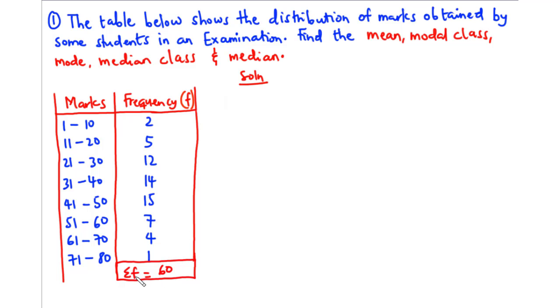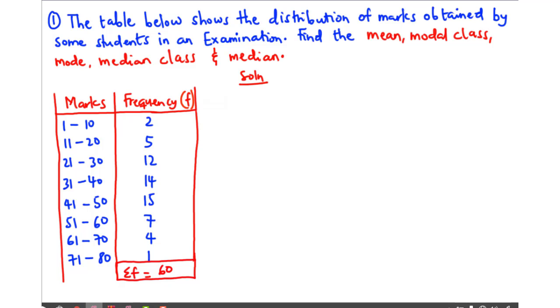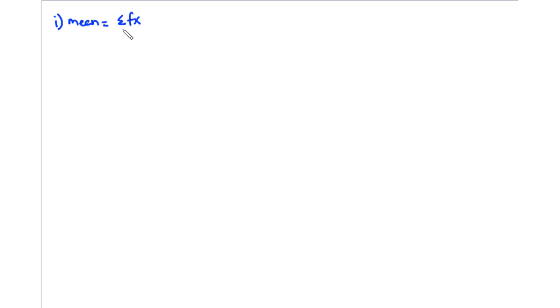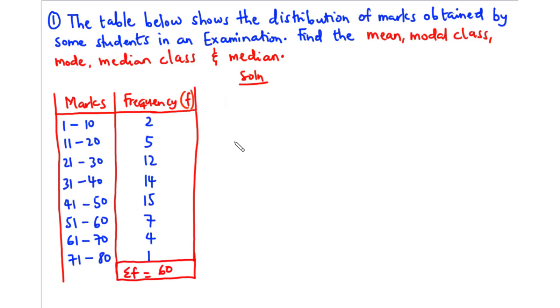After finding summation of f, let's talk about the mean. The mean is given by summation of fx divided by summation of f. We know summation of f is 60, so we need to find summation of fx. Since this is grouped data, we can't find the exact mean because we don't know the individual values within each interval.